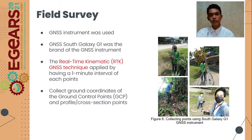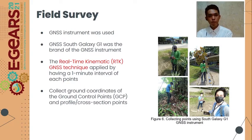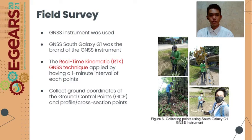In conducting the field survey, a GNSS instrument was used — specifically the South Galaxy J1. The real-time kinematic (RTK) GNSS technique was applied with a one-minute interval at each point. The purpose of the field survey was to collect ground coordinates of the ground control points and the profile points and cross-section points.